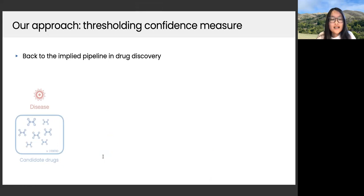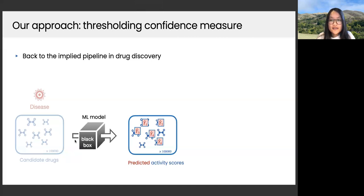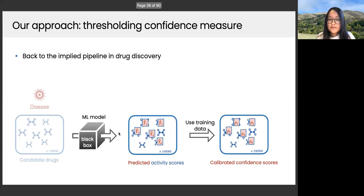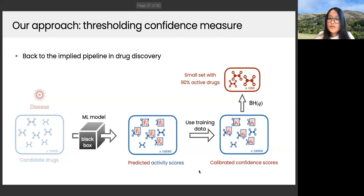After computing p₁ through pₘ, we obtain the selection set R by the Benjamini-Hochberg procedure at level q. Applied to the drug discovery pipeline: we have a disease, candidate drugs, and a machine learning model giving predicted activity scores ŷ₁, ŷ₂, etc. Our method uses training data to turn predicted activity scores into calibrated confidence scores p₁, p₂, p₃, each in [0,1], then applies the BH procedure at level q to get a smaller set such that 90% of them are active drugs.